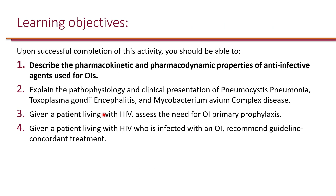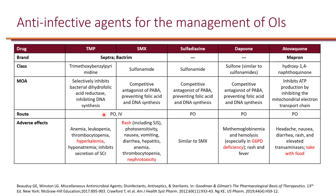The first learning objective is to describe the pharmacokinetic and pharmacodynamic properties of anti-infective agents used for opportunistic infections. Trimethoprim-Sulfamethoxazole combination — brand names Bactrim or Septra — is by far the most commonly used agent. It is available as PO and IV, though most commonly used as PO. The IV formulation has very limited stability, so PO is preferred when possible.